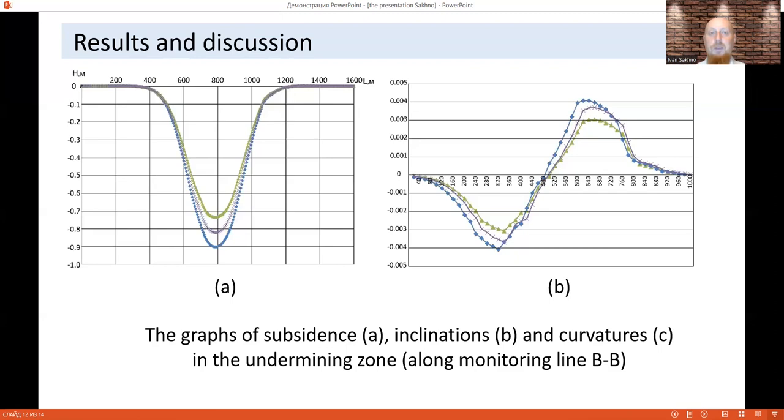Thus, flooding leads to activation of surface deformation. This causes increased hazard for surface objects, especially at the extension trough zone. For the case study, the risk of destruction of houses in Mikalevka village, which is located in the subsidence-prone land, increased.